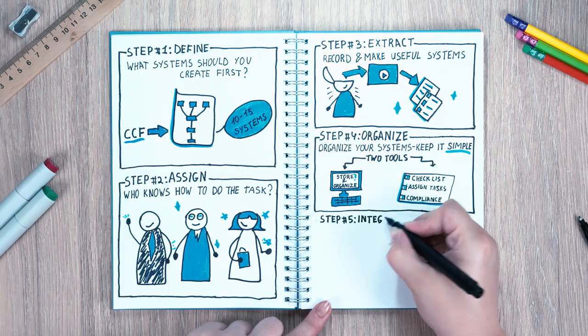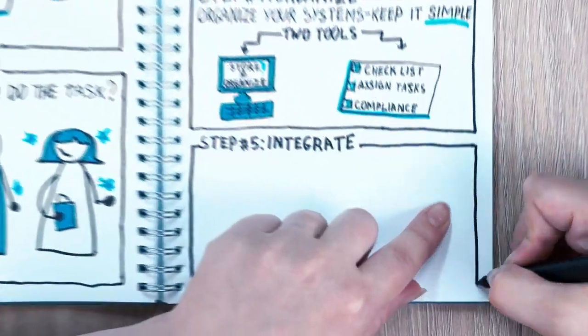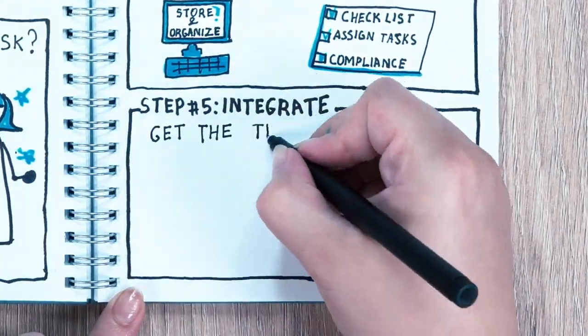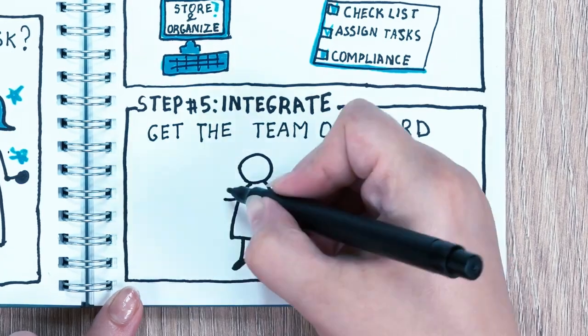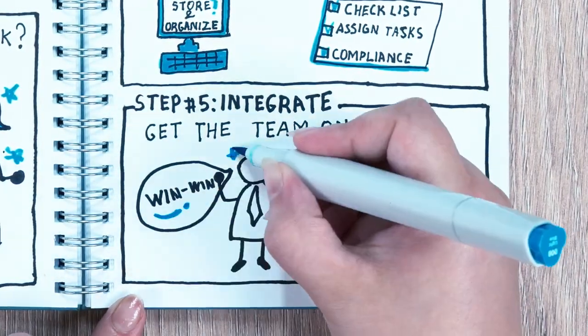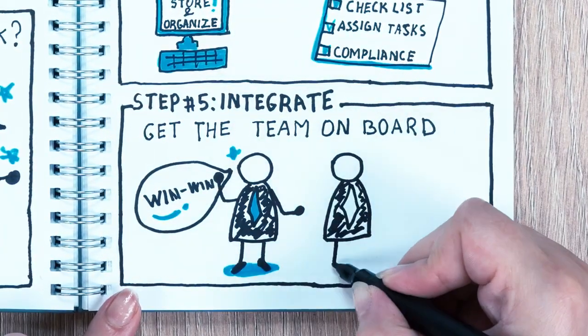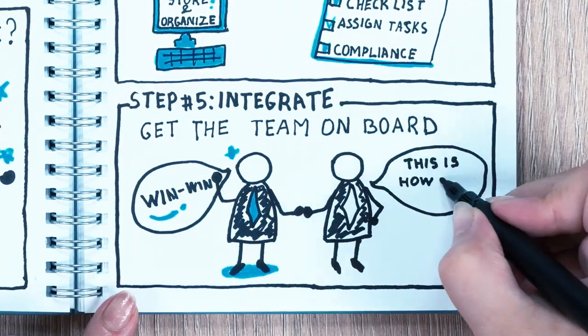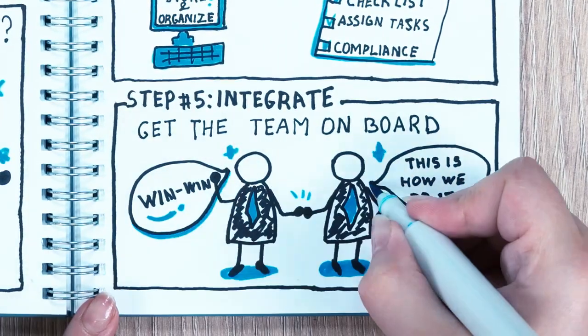Step number five is integrate. In this step, you will learn the secret to get your team on board with these new processes, is to show how the changes benefit the team member directly, not just the company, and involve as many team members as possible in the creation of the new systems.